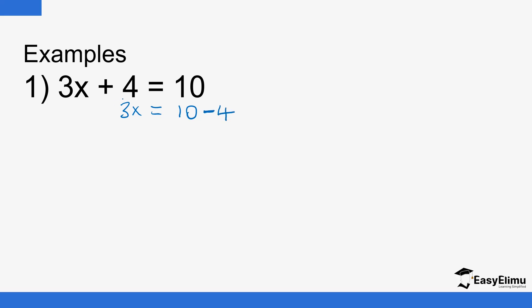So every time a term crosses to the other side of the equal sign the sign changes. We talked about terms, like terms, unlike terms, coefficients and so on. So if it is addition it goes to subtraction on the other side. If it is subtraction it will change to addition. Multiplication maybe goes to division, and division changes to multiplication to the other side. So the sign changes when a term crosses to the other side. So now we have 3x equals 6.